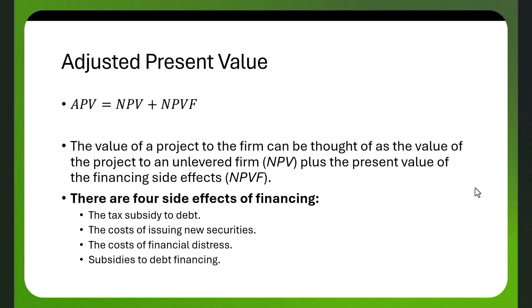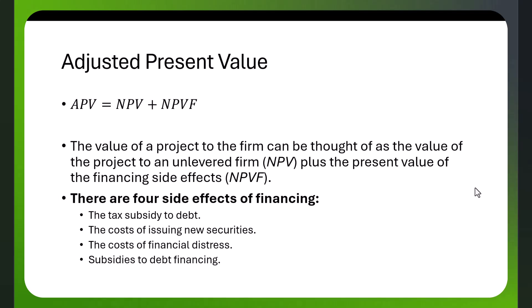Let's take a look at the concept of adjusted present value. Adjusted present value, or APV, is a capital budgeting technique. It says the value of a project to the firm can be thought of as the value of the project to an unlevered firm — that is, a firm not using any debt — NPV, plus the present value of the financing side effects, NPVF.